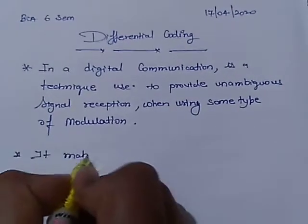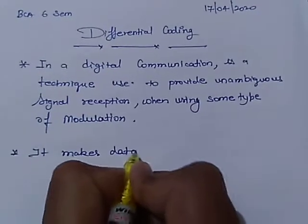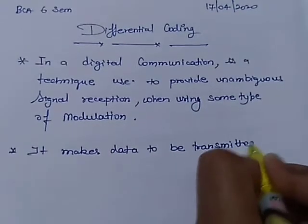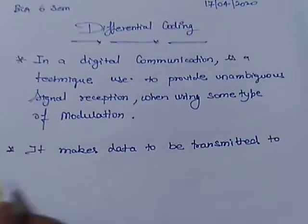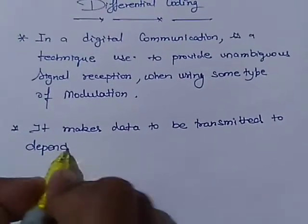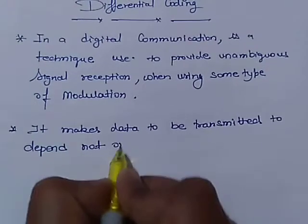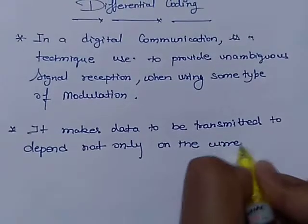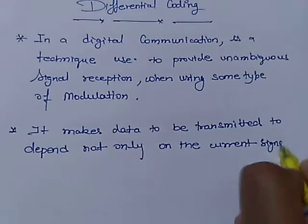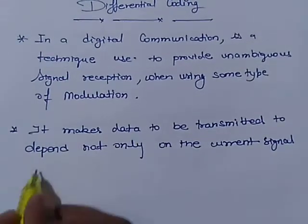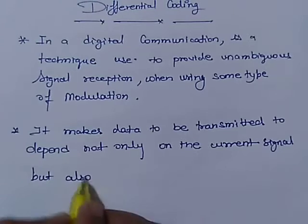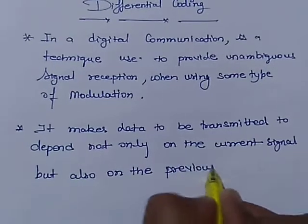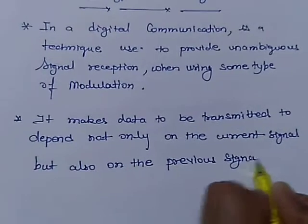First, it makes data to be transmitted depend not only on the current signal, that is ongoing signal, but also on the previous signal.